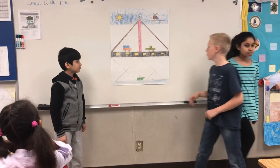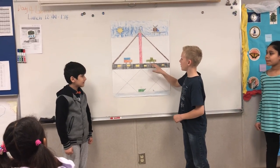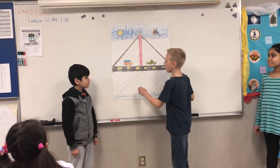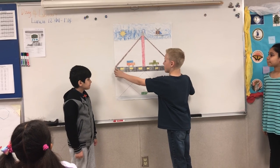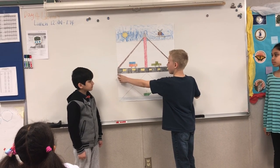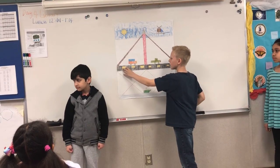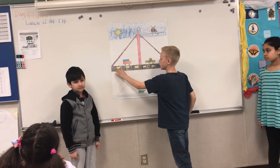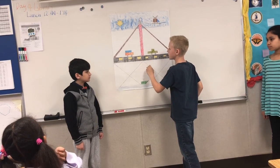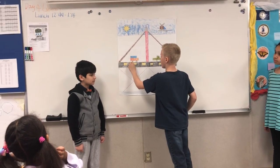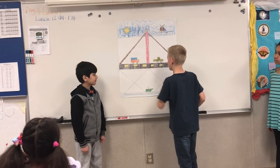Now we're going to move on to the road and the cars. On the road we have a set of parallel lines. The rectangles are made out of two sets of parallel lines. The cars are made out of sets of parallel lines and angles.